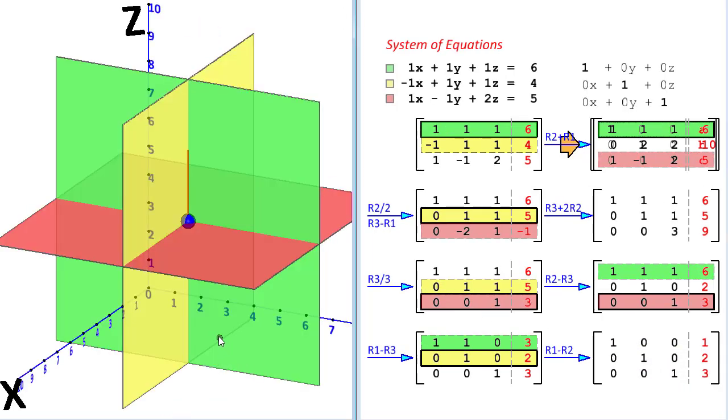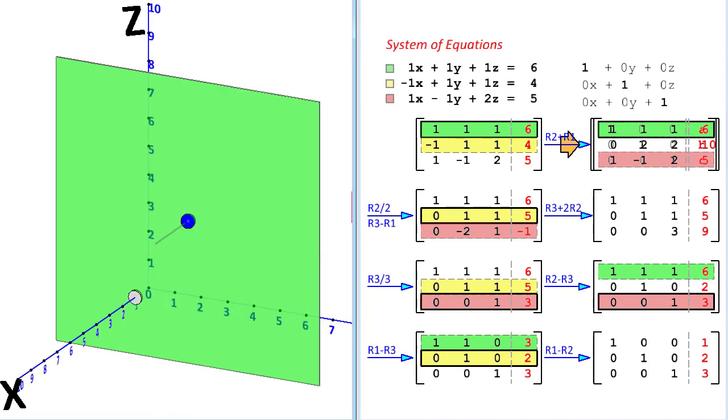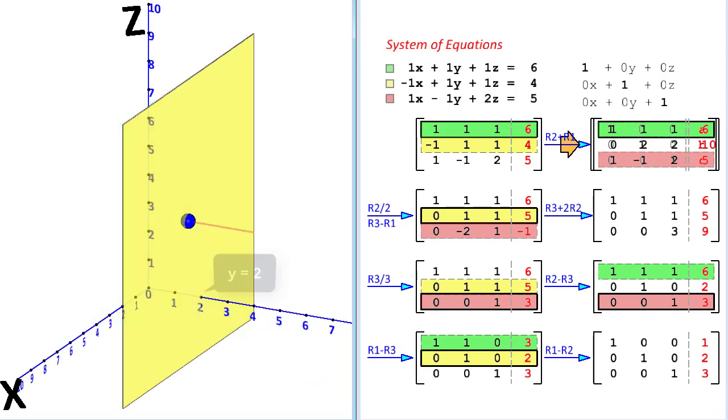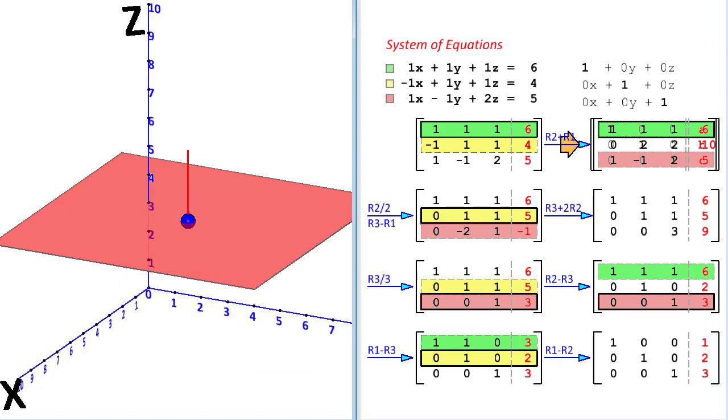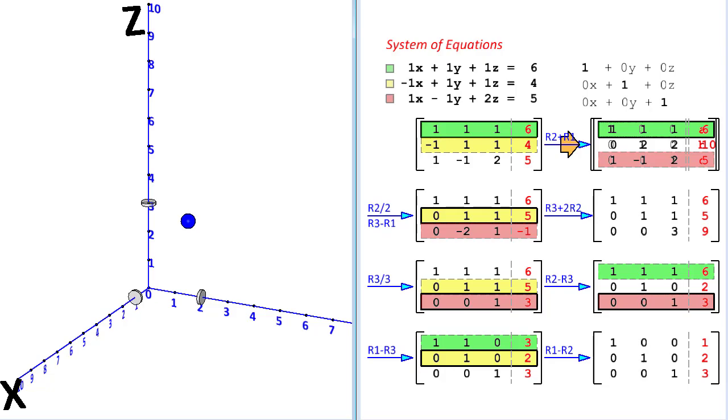Graphically, the solution can be read as the x, y and z intercepts made by this simplified set of planes. We take the first plane which is making the x intercept at x equal to 1. Then we take the second plane which is making the y intercept at y is equal to 2 and then we take the third plane which is making the z intercept at z equal to 3. So, x equal to 1, y is equal to 2 and z equal to 3 is our solution. This is the Gauss-Jordan elimination process.